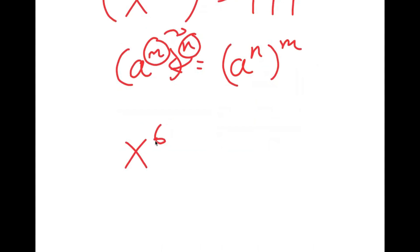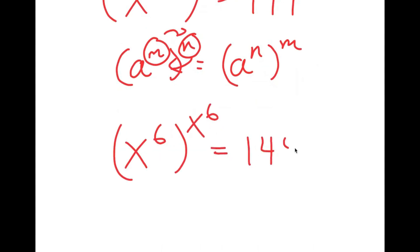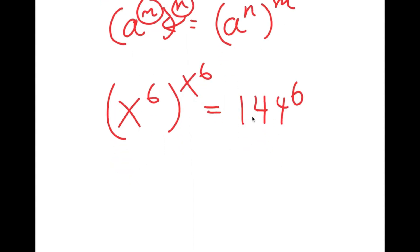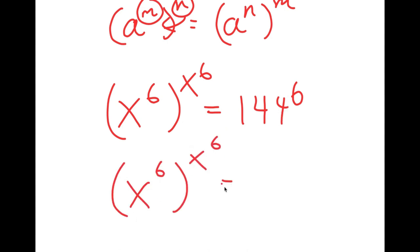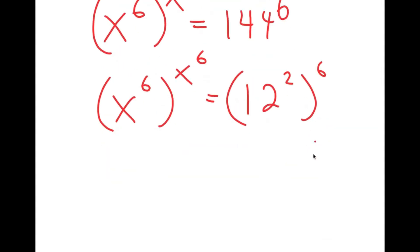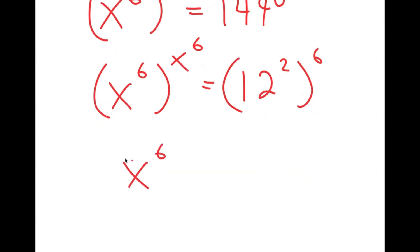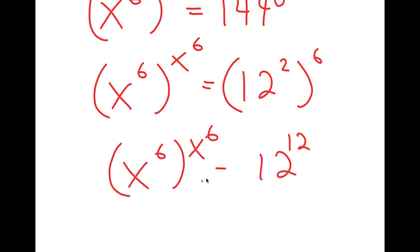So now I get x to the power of 6 to the power of x to the power of 6, is equal to 144 to the power of 6. And 144 is the same thing as 12 squared. So I get x to the power of 6 to the power of x to the power of 6 is equal to 12 squared to the power of 6, which turns into 12 to the power of 12.